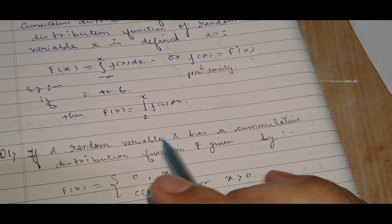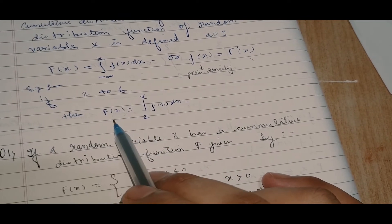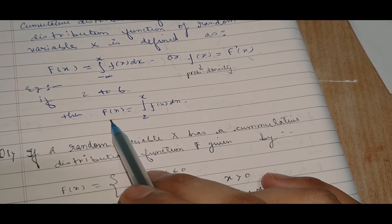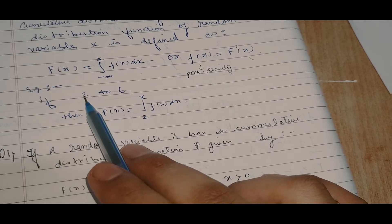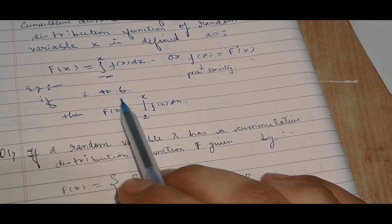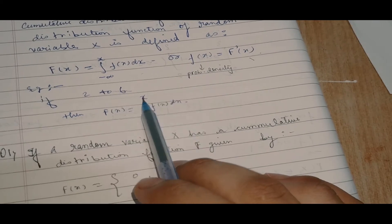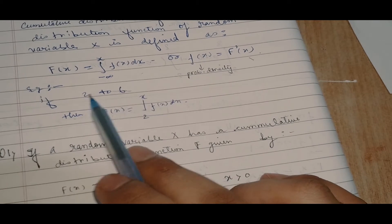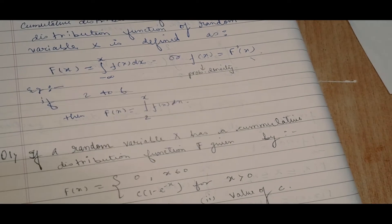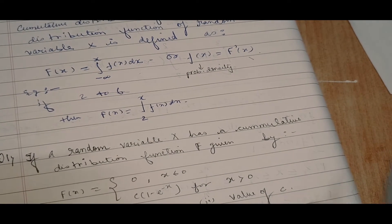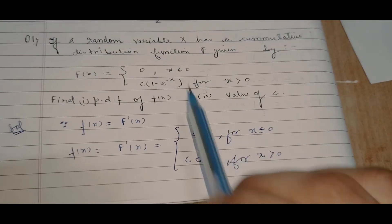For example, if x ranges from 2 to 6 and we need to find the cumulative distribution function capital F(x), we write the limits from 2 to x — not from 2 to 6. So it is the integral from 2 to x of f(x) dx.